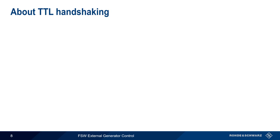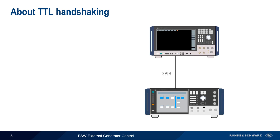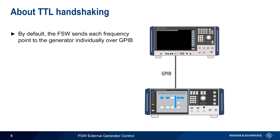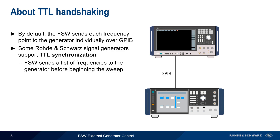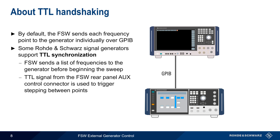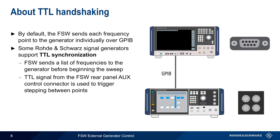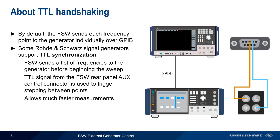Now let's come back to TTL handshaking. When the FSW and generator are connected over GPIB, the default behavior is that the FSW sends each frequency point to the generator individually. Some Rohde & Schwarz signal generators support TTL synchronization. When this is enabled, the FSW sends the entire frequency list to the generator before beginning the sweep. A TTL signal from the FSW's AUX control connector then triggers the generator to step to the next frequency point in the list. TTL handshaking therefore allows much faster measurements when using GPIB as the connection method.